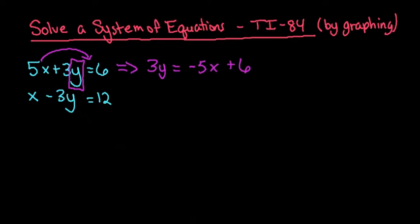Remember that in order to be in y equals mx plus b form, y has to be completely by itself. So we would divide everything by 3, and we would write this as y equals negative 5 thirds x plus 2.